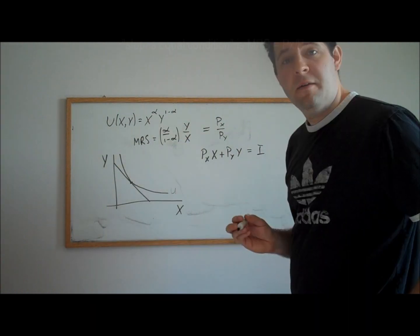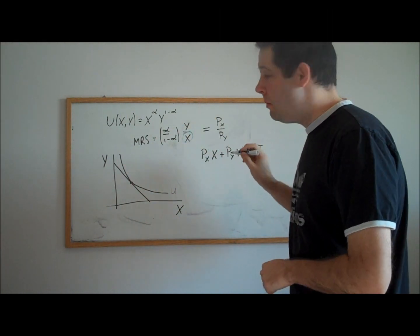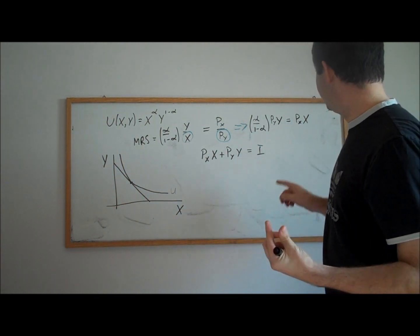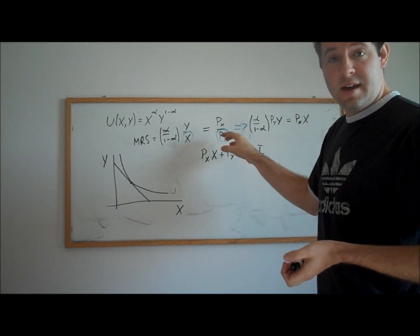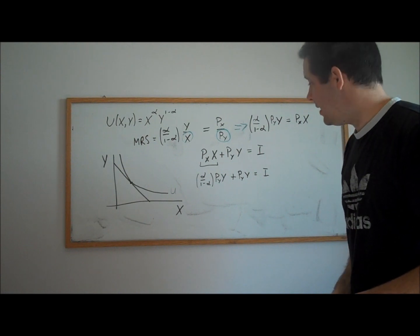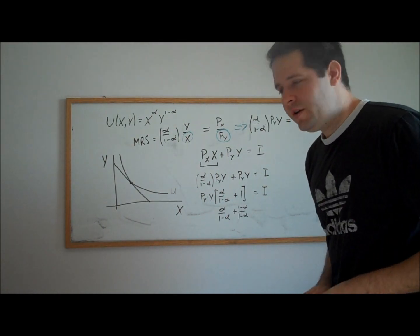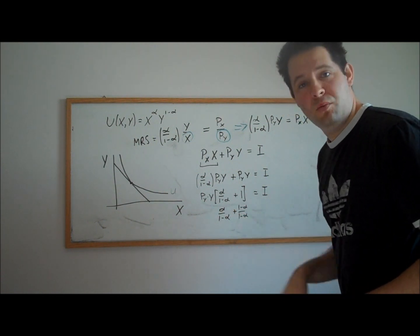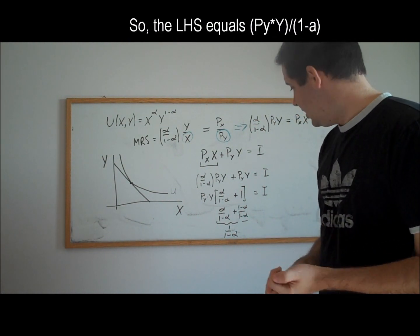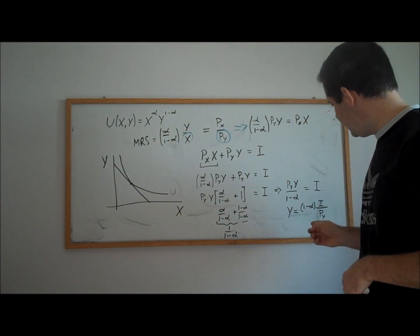Let's solve this system of two equations and two unknowns in a particular way. First, multiply both sides of the slope-equality condition by x and by p_y. Then think of p_x times x as something we can substitute out of the budget constraint equation. On the left-hand side we get p_y times y in both terms, so we factor that out, get a common denominator, and the alphas in the numerator cancel, leaving 1 over 1 minus alpha. Inverting and solving for y gives the Cobb-Douglas demand for good y.